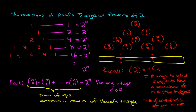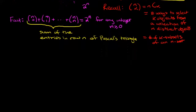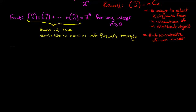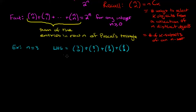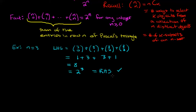The technique we're going to use to prove this fact is a common combinatorial technique. What we're going to do is show that the left-hand side is counting the same thing that the right-hand side is counting. Before going through the full proof, I want to start with a little example. If we take n equal to three, the left-hand side is three choose zero plus three choose one plus three choose two plus three choose three, which equals one plus three plus three plus one, which is eight — the same as two to the power of three.